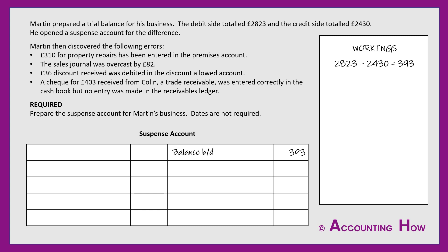The first error: £310 for property repairs has been entered in the premises account. It's important to recognise the type of accounts — whether they are expenses, assets, drawings, income, liabilities, or capital. You might be familiar with acronyms such as DEAD CLIC. Property repairs is an expense, whereas premises is an asset. So an expense has been entered into an asset account — but expenses and assets are both debits, meaning he's got the type of account wrong but the side right.